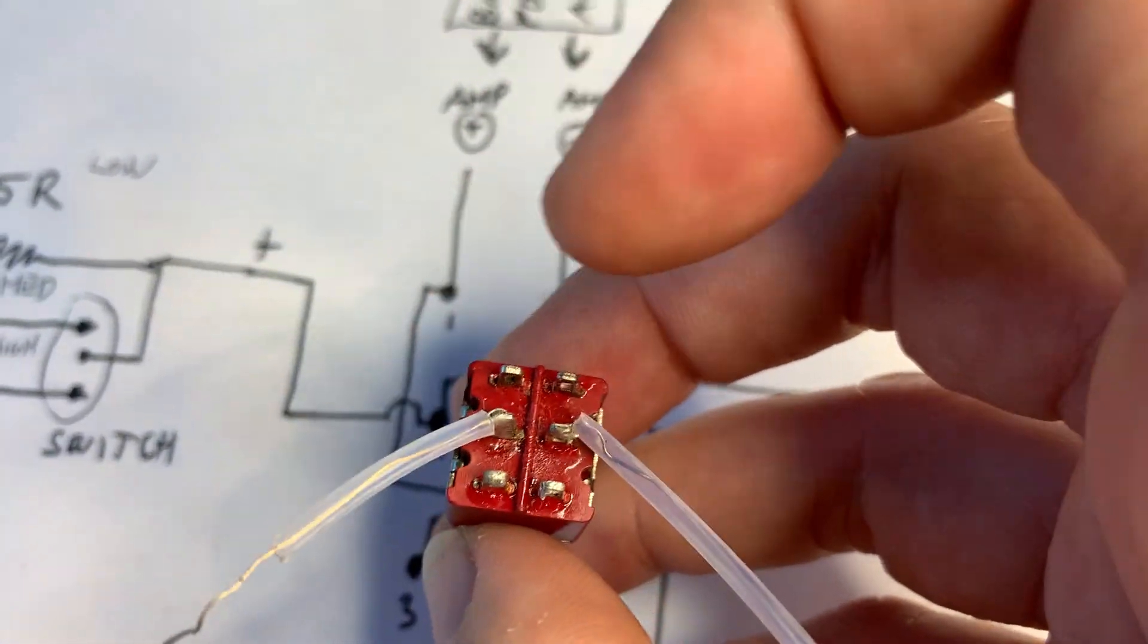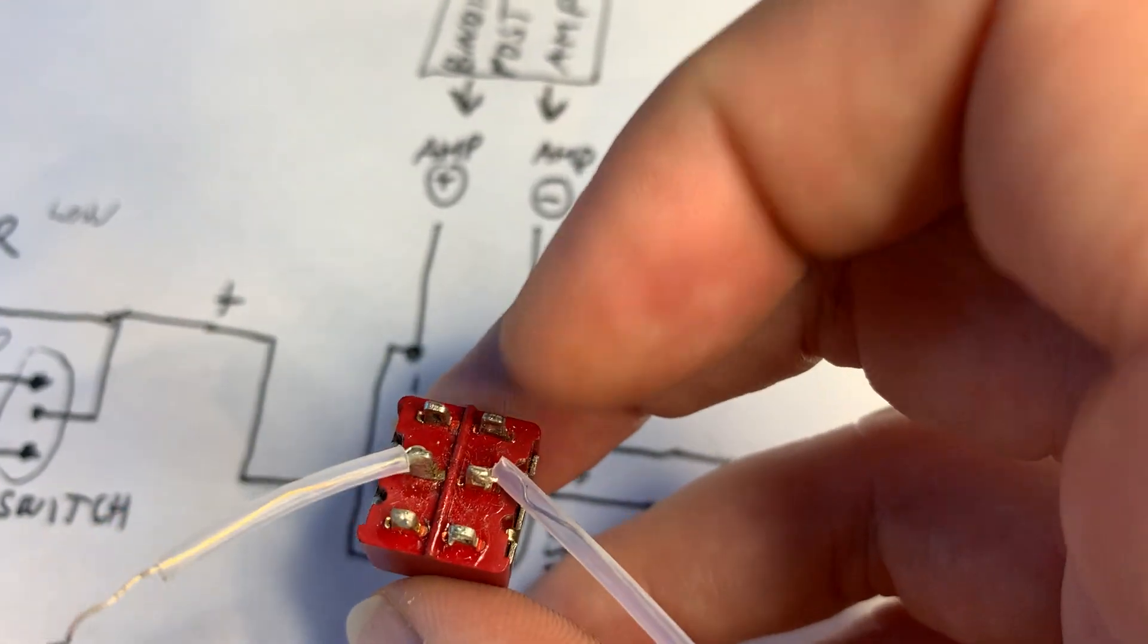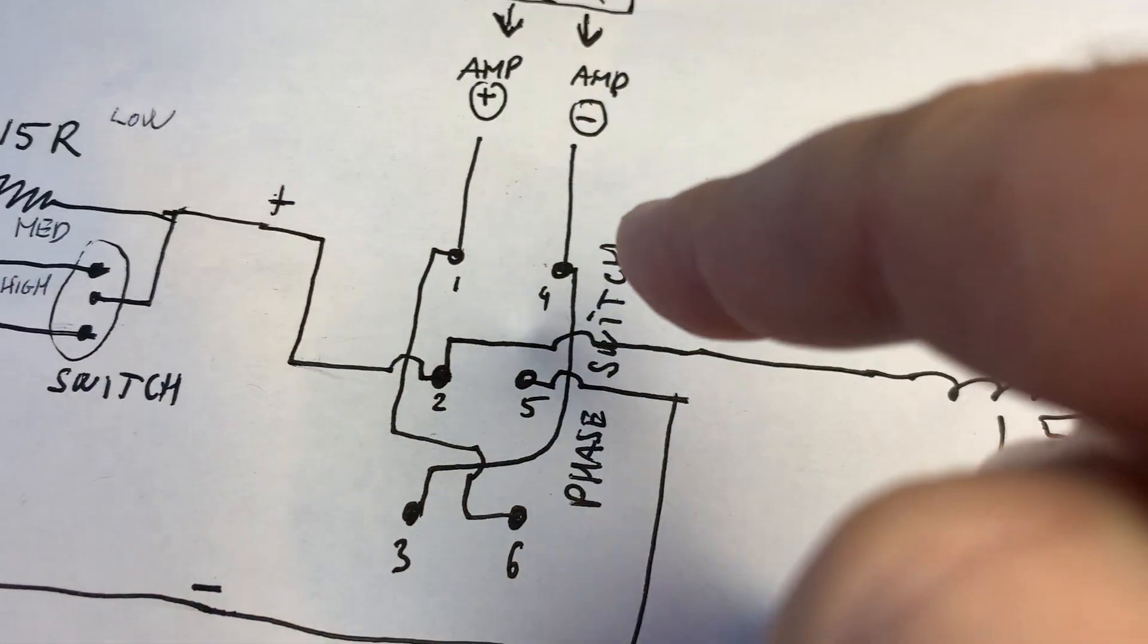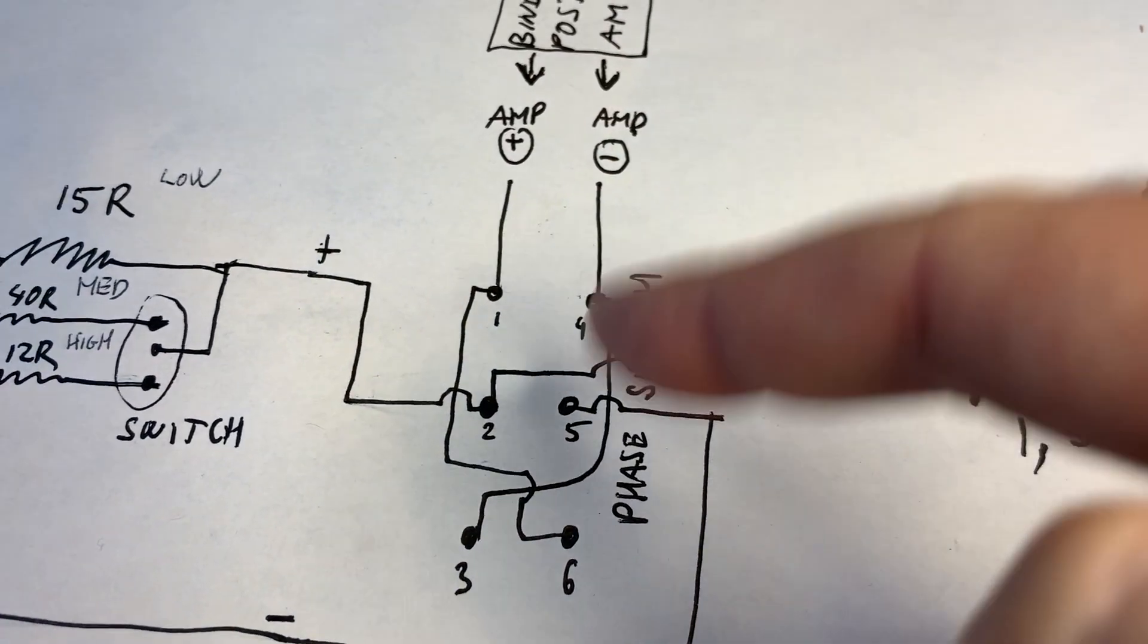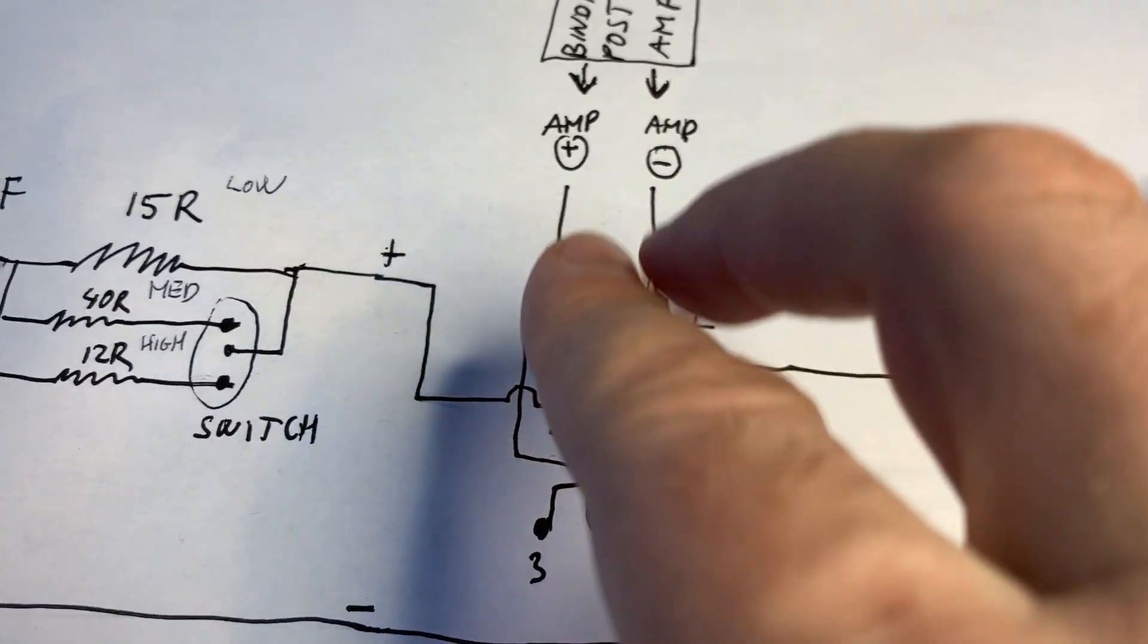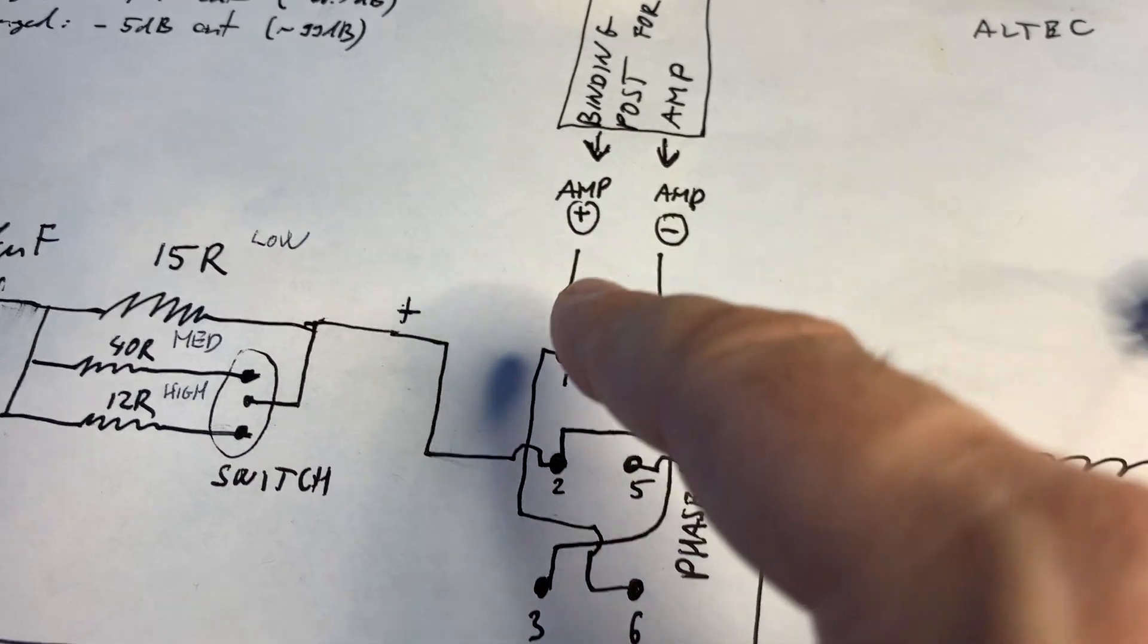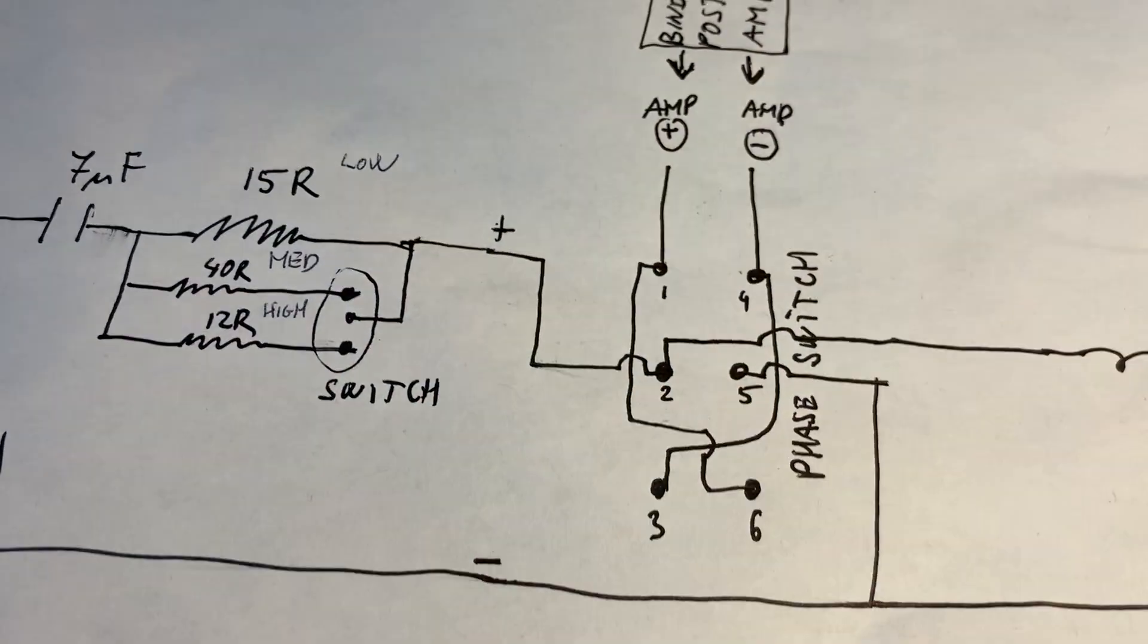You connect the top left to the bottom right, and the top right to the bottom left, criss-crossing them. When you throw the switch back or there, you are either getting the positive stays the positive or the positive is routed to that side. So you are flipping the phase.